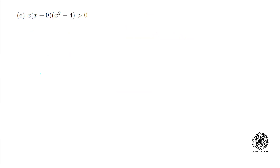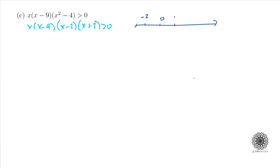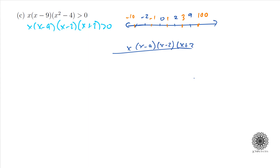Let's try another polynomial inequality, and hopefully this one won't just result in one value. I'm going to factor this as x times (x minus 9) times (x minus 2) times (x plus 2), using difference of squares, all greater than 0. For the sign chart, my zeros are negative 2, 0, 2, and 9. I need to pick test points between these: negative 10 for below negative 2, negative 1 between negative 2 and 0, positive 1 between 0 and 2, and 100 for above 9. I'll set up a table with columns x, (x minus 9), (x minus 2), and (x plus 2).